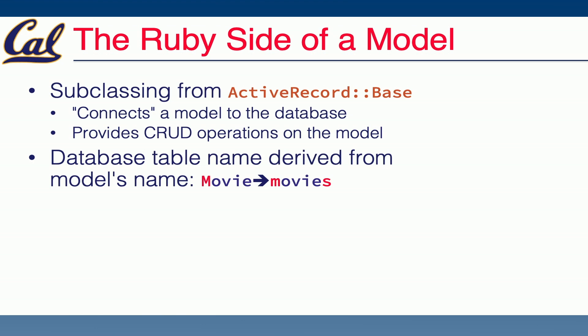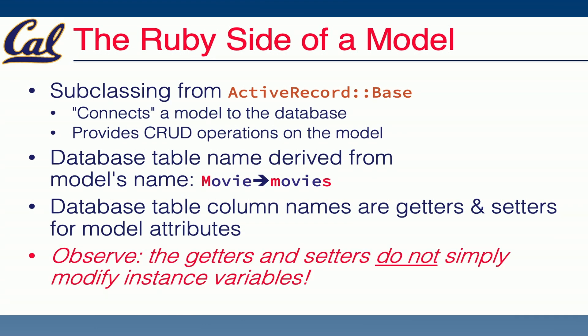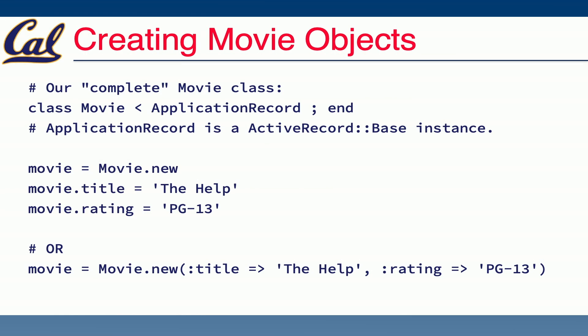How do we know which model maps to which table? Rails defines a very common convention: the model Movie — notably with a capital M and singular — maps to the table named movies, with a lowercase m and plural. Rails will help you with irregular plurals too: you can have a Mouse model with a mice table, and Rails knows how to handle that. So if you're concerned about pluralization, it's been a solved problem. Database columns like rating and title are mapped to methods that exist on our model. And remember in Ruby, because every a.b is a method call on an instance of a class, when we update and set things like titles, we're calling methods that exist on our movie object.